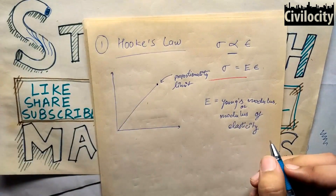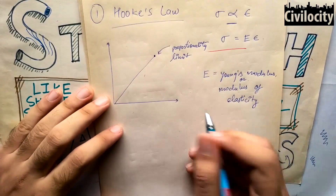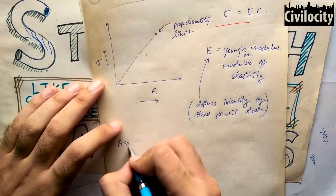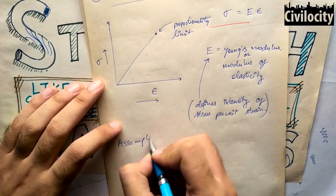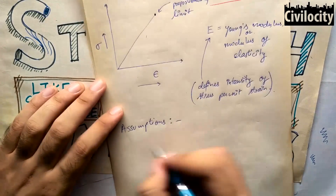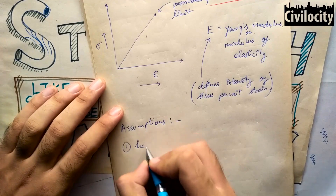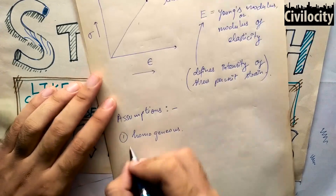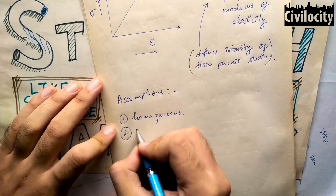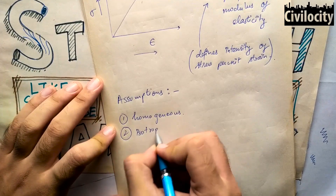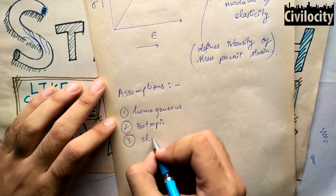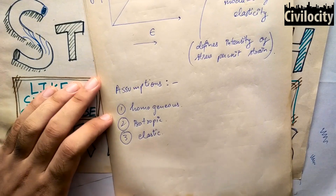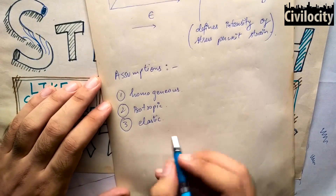The modulus of elasticity tells us the intensity of stress that causes unit strain — that is, the amount of stress that causes unit strain. This is equal to the slope of the stress-strain curve. Now we have some assumptions: the material is homogenous, meaning its properties are equal in all areas; it should be isotropic, meaning properties are equal in all directions; and the material should be elastic.